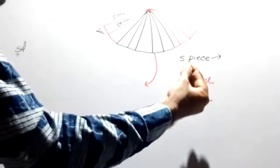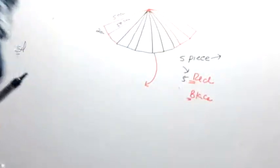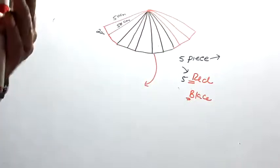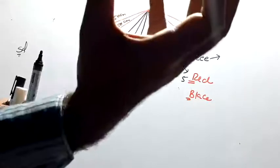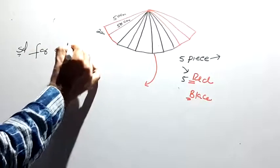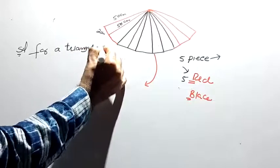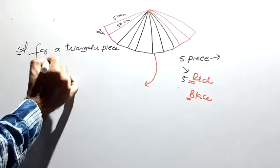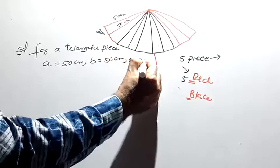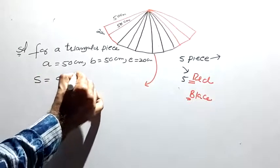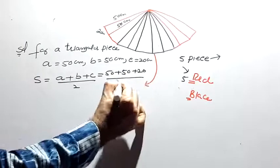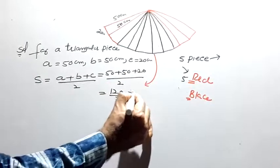So we have a triangle with dimensions: A equals 50 centimeters, B equals 50 centimeters, and C equals 20 centimeters. Using the formula s equals (a+b+c)/2, we get s equals (50+50+20)/2, which equals 120/2, so s equals 60 centimeters.